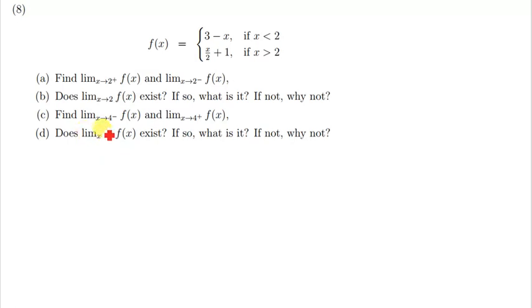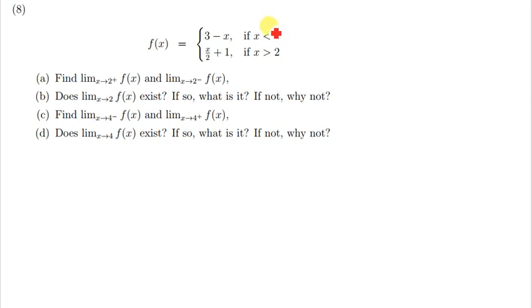The next question says: find the limit of f of x when x is approaching the negative side of 4. The negative side of 4 means we're talking about numbers that are less than 4. When we look at numbers that are less than 4, we can either use the first or second piece of the function.